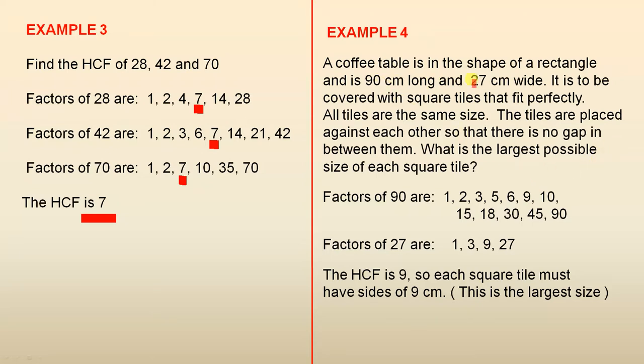So we have 90 and 27, they're the measurements of the table. So the factors of 90 are all these numbers. The factors of 27 are all these numbers here. And you'll notice that 9 there and 9 there, see those two numbers? That is the highest number which appears in both lists, so the highest common factor is 9. So what does that actually mean? Each square tile must have sides of 9 centimeters, so that's the largest possible size.